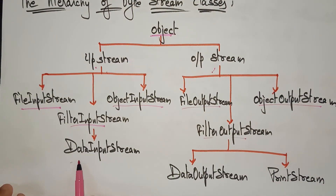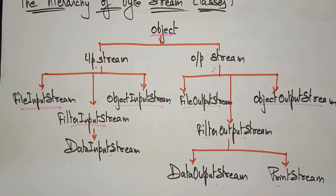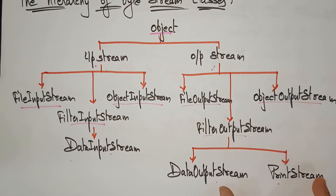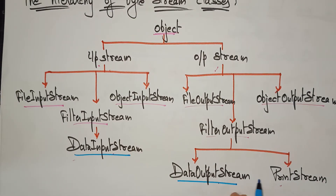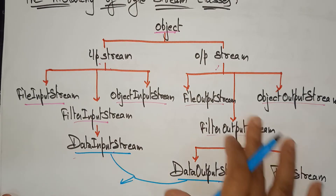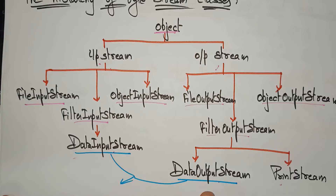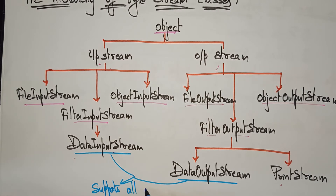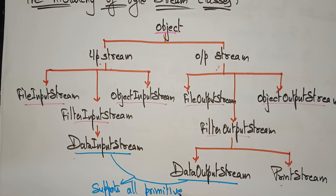FilterInputStream is further converted into DataInputStream, and on the output side we have DataOutputStream and PrintStream, because we are displaying data. Note that DataInputStream and DataOutputStream — the starting letter of every word is a capital letter, so these are all classes. These two classes support all primitive data types.